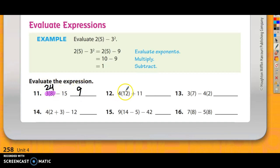And on number 12, 4 right next to 12 means 4 times 12 is 48, plus 11 is 59. I've got two sets of these problems on number 13. I've got 3 right next to 7, that means 3 times 7, that's 21. And I also have 4 right next to 2 means 4 times 2, that's 8. So number 13, I've got 21 minus 8, that's 13.